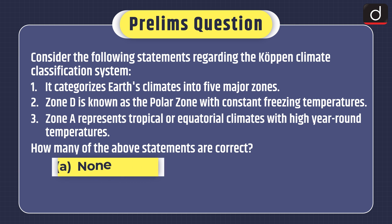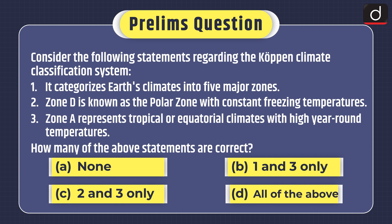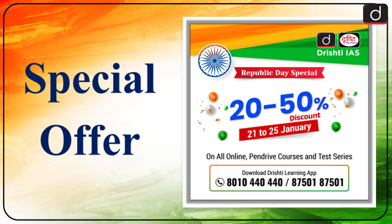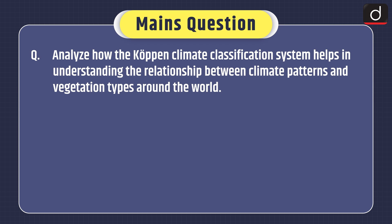Now it's time for practice questions. Prelims-based question: Consider the following statements regarding the Koppen Climate Classification System. 1. It categorizes Earth's climate into 5 major zones. 2. Zone D is known as the polar zone with constant freezing temperatures. 3. Zone A represents tropical or equatorial climates with high year-round temperatures. How many of the above statements are correct? Options: None; Only statements 1 and 3; Only statements 2 and 3; or All statements. You can send the answer in the comment section. For the mains question: Analyze how the Koppen Climate Classification System helps in understanding the relationship between climate patterns and vegetation types around the world.